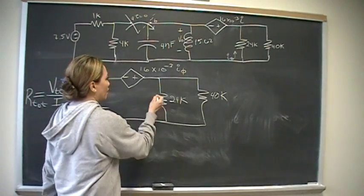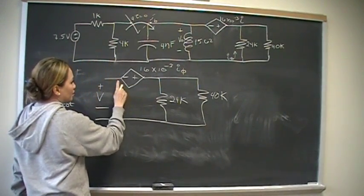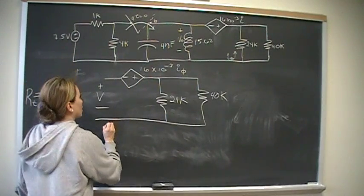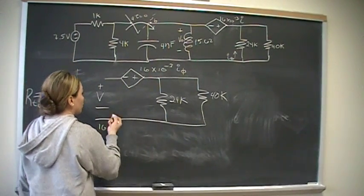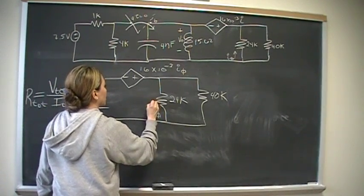Alright, so the voltage across here is going to be this voltage, 16, the dependent voltage source. And we have I sub V. I forgot to make that. I sub V is going this way.